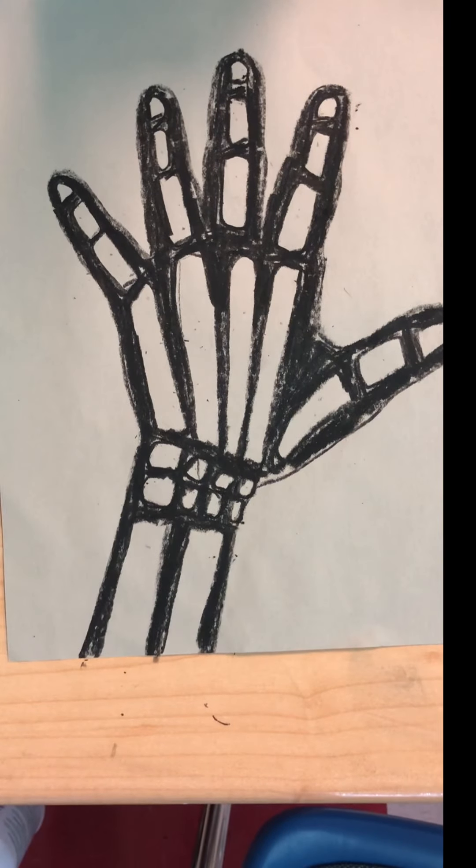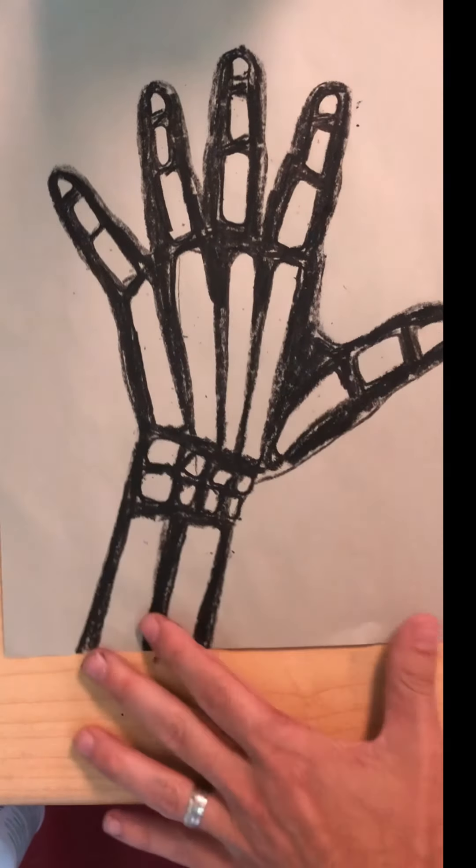All right. Now it's your turn. Go ahead. Take your time. Slowly, but carefully color all the black around your bones. We'll pause the video. When most everyone's done, we'll continue.